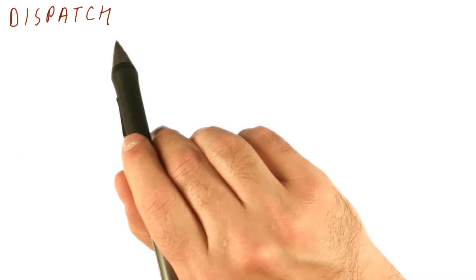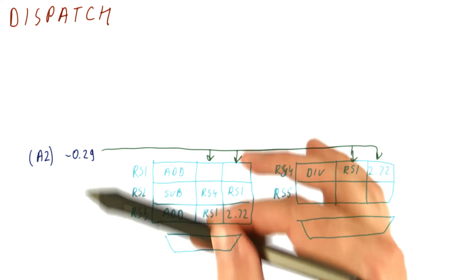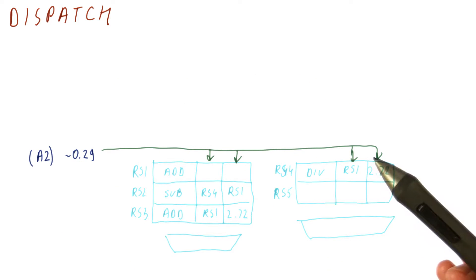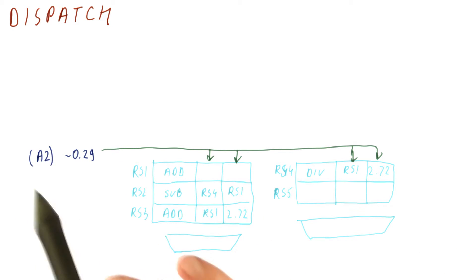So now let's look at what happens when we need to dispatch instructions. So this is the situation in a cycle. Dispatch basically needs to consider latching operations results that are produced and also deciding which instructions are ready to execute.